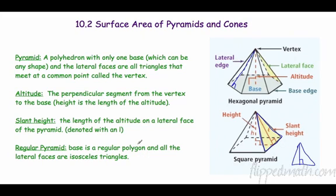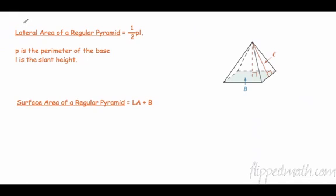A regular pyramid has a base that is a regular polygon and isosceles triangles as lateral faces, so all lateral edges are congruent — those are the ones we'll work with mostly. Our formula for the lateral area of a regular pyramid is one-half times p times l, where p is the perimeter of the base — we add all the sides around the base — and l is the slant height.